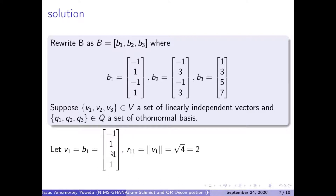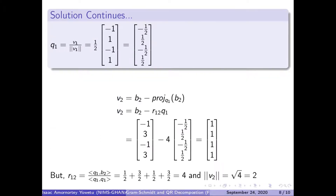So we go ahead to solve the problem. First of all, we let V1 be equal to B1, which is the same as the matrix column we have here. We calculate our R11, which is the norm of V1. We find the length of it, and the norm of V1 is equal to 2, so one-half times our V1 vector gives us our Q1.